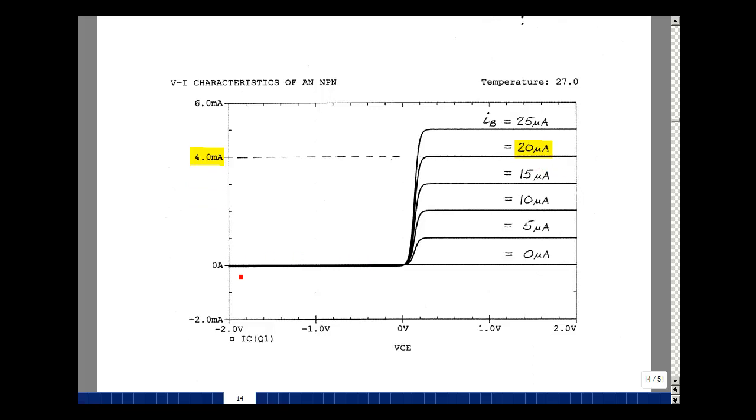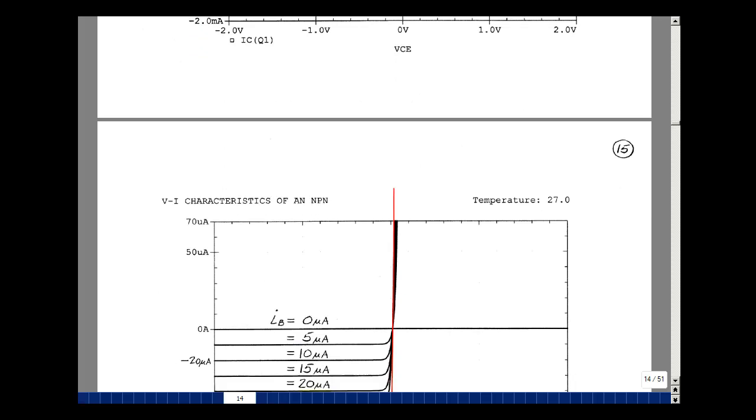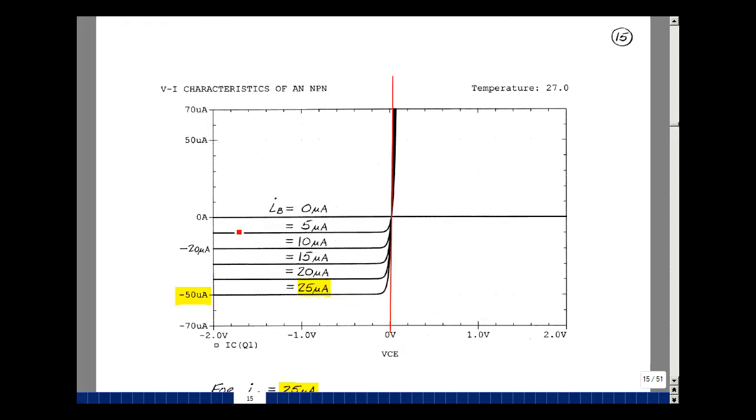You can also see here there's a number of lines that are kind of scrunched together, because there's something in the third quadrant. I zoomed in on that third quadrant and labeled the values of currents going from zero to 25 microamps. And you can see here for a base current that's positive, we get a negative collector current. This is the current that's entering the collector, which means it's actually leaving the collector.